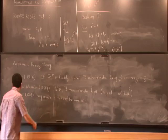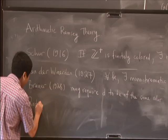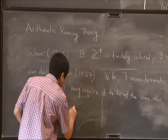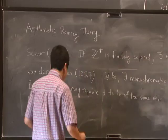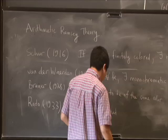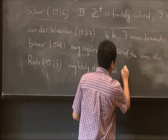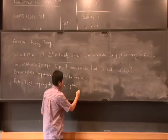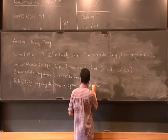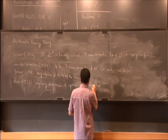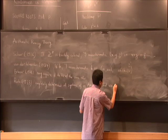And so Rado in the 1930s completely characterized linear forms. Rado completely determined all systems of equations. We have a matrix A and a vector x, and we want our system of equations that are partition regular.